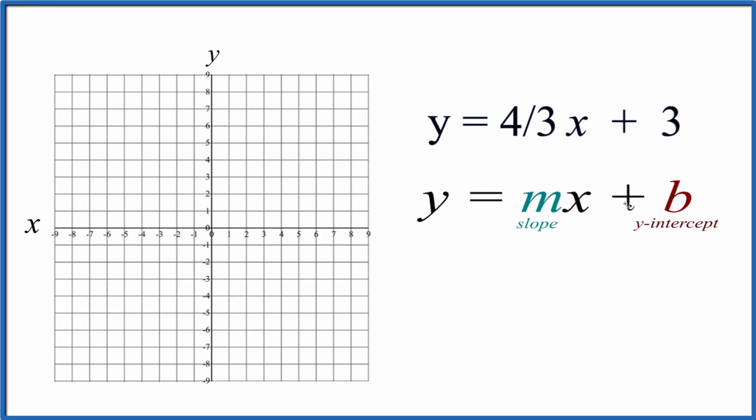So y equals mx plus b. b is the y-intercept, and that is 3. So what we do, we go to the y-axis, we go to 3, and that's where our line is going to cross the y-axis. That's the y-intercept.